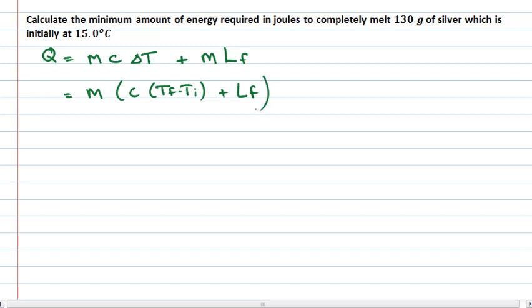One thing to point out is that when dealing with the energy for a phase change, you have to choose whether it's positive or negative. For changing temperature, delta T automatically gives you that sign. If you're raising the temperature, T final is greater than T initial, giving a positive quantity. If I want to change from a solid to a liquid, you have to add energy in, so I put a plus sign there.